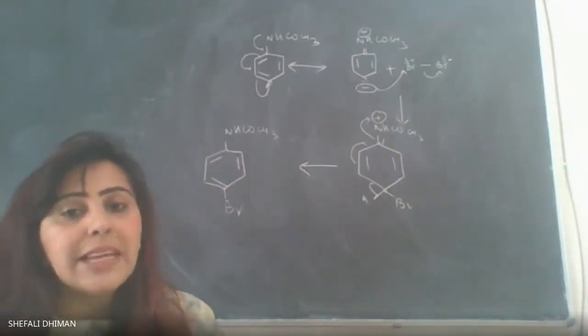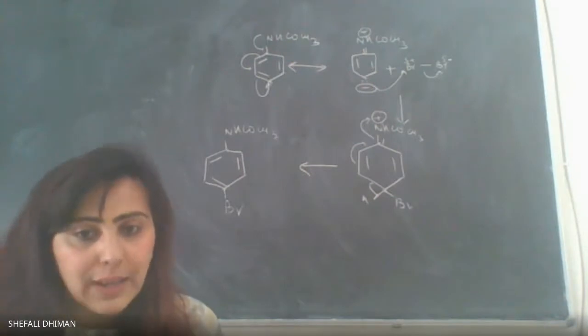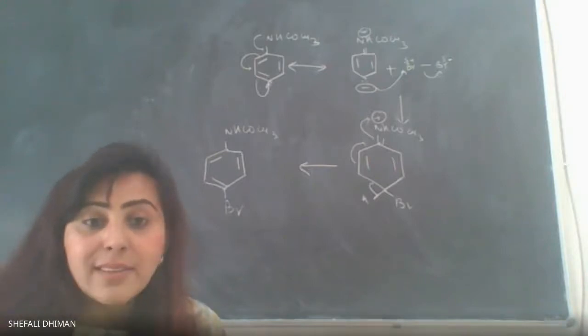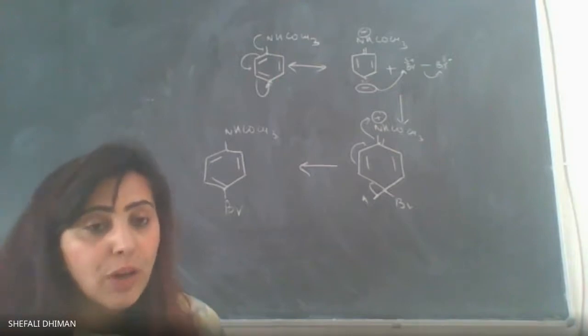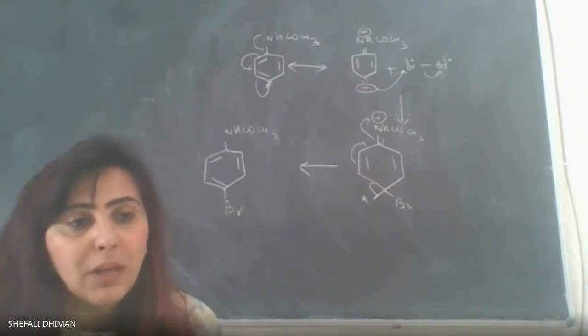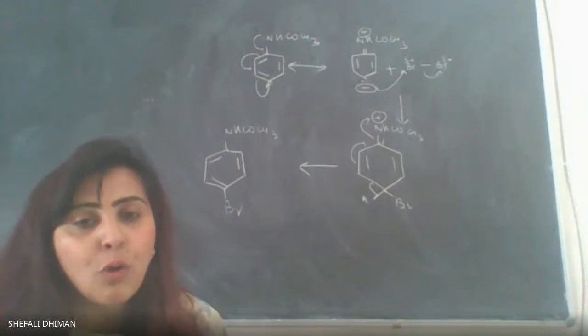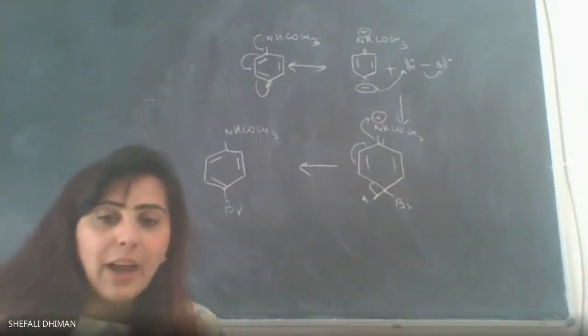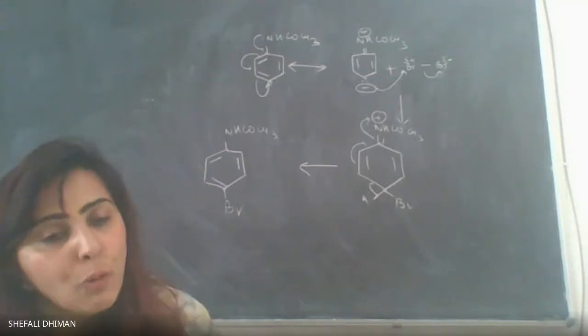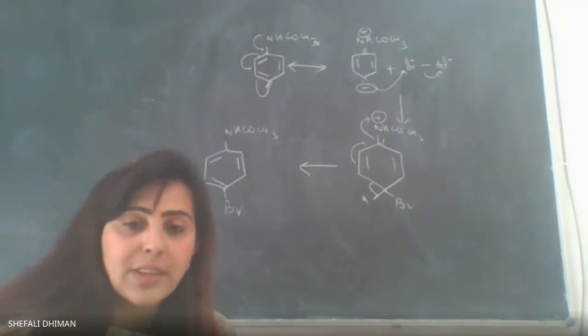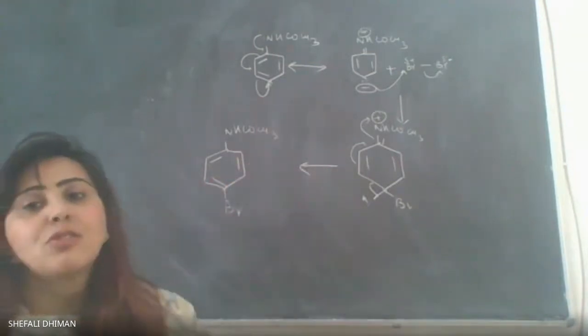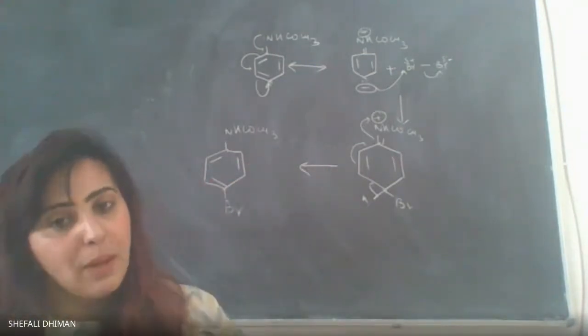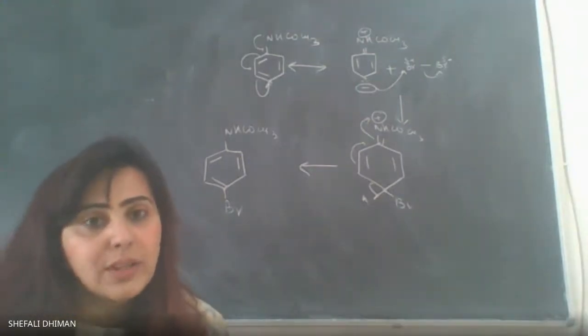But when we take highly activating groups like phenol and aniline, 2,4,6 tri-substituted products would be formed. If I have phenol and react it with bromine, I would end up with 2,4,6 tribromophenol. If I have aniline and react it with bromine, I would end up with 2,4,6 tribromoaniline.